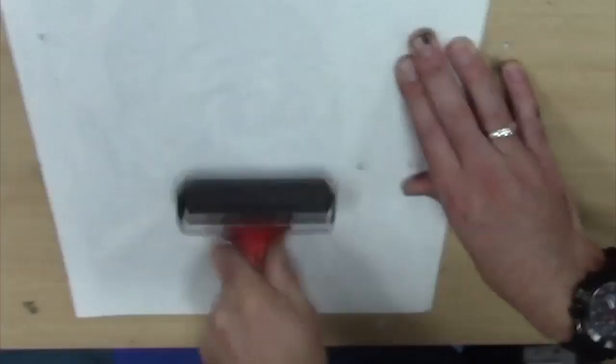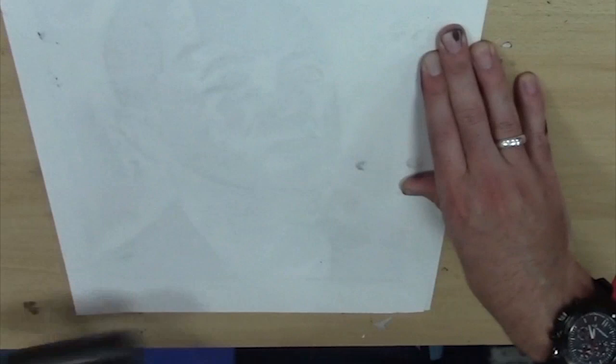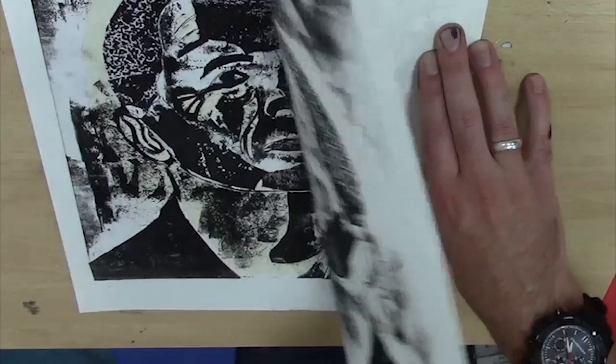I'm easing off the pressure when I get to some of these edges, so it fades away a little bit. I can see that that's going to print nicely. Right, then take that corner, peel it away.